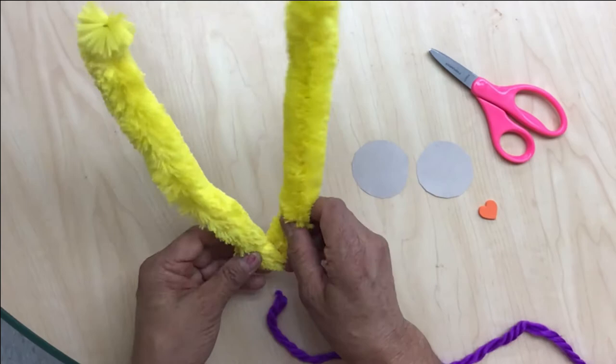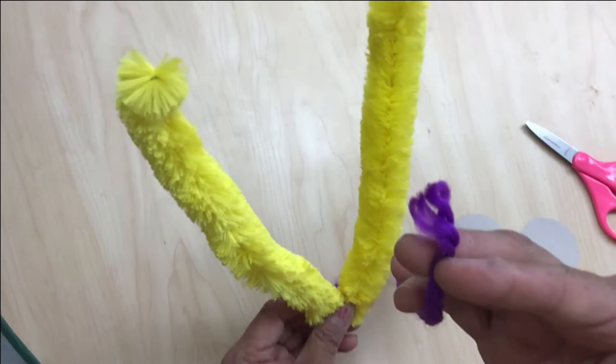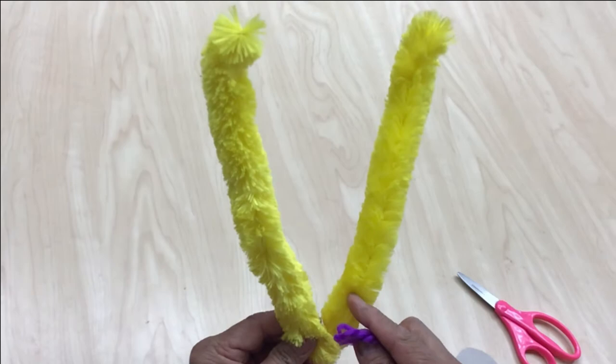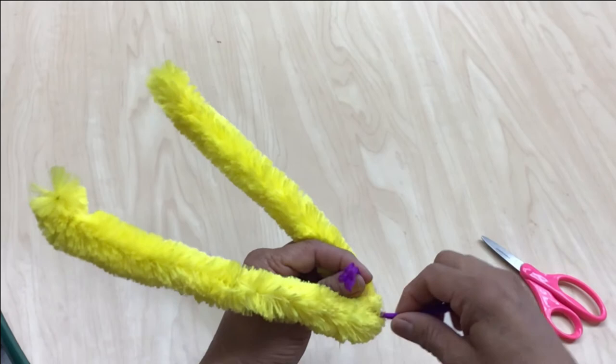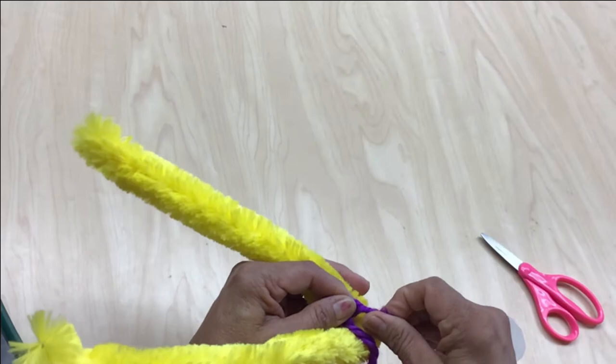Then I'm gonna get my shape of the V pipe cleaner and my purple yarn. And on the folded, bended part of the pipe cleaner, I'm gonna put my string, my yarn over it and make a knot.